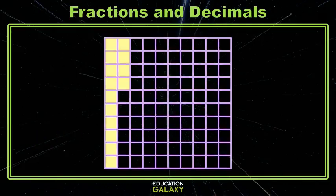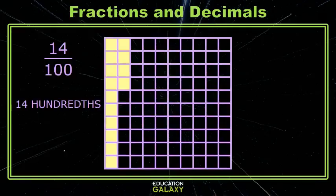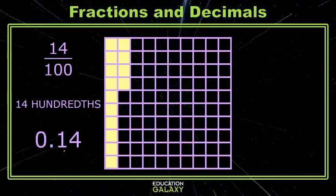Here, fourteen pieces are shaded. We write fourteen hundredths. Or we can write the fraction. Now when we write the decimal, we're going to put the one in the tenths place and the four in the hundredths place. Because we really have a tenth and four hundredths, right?